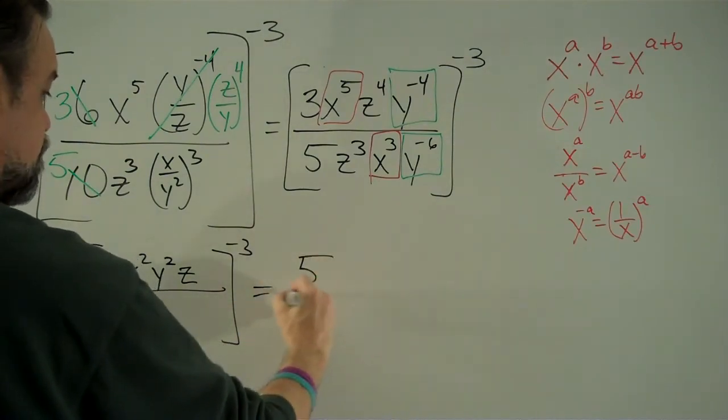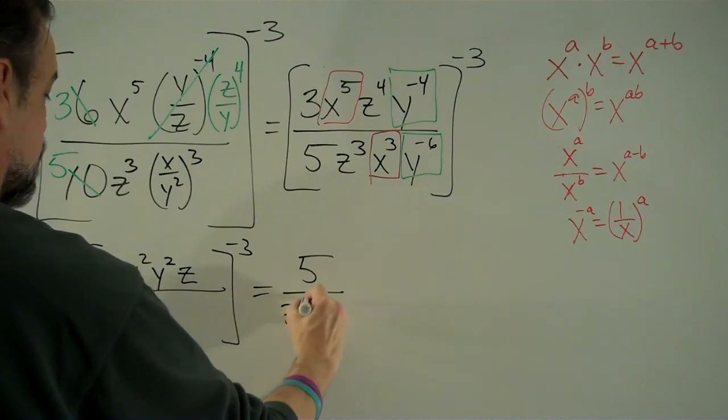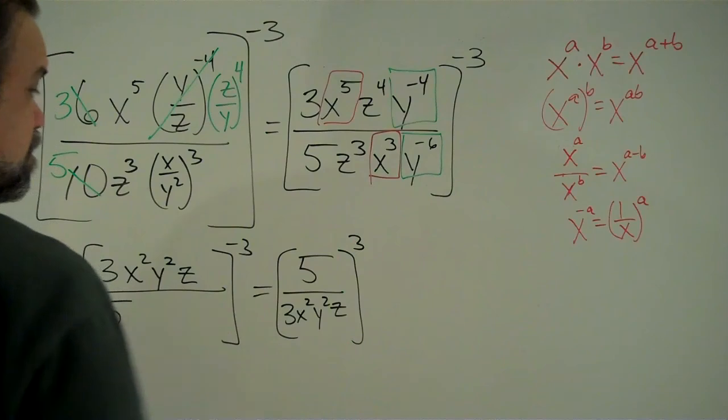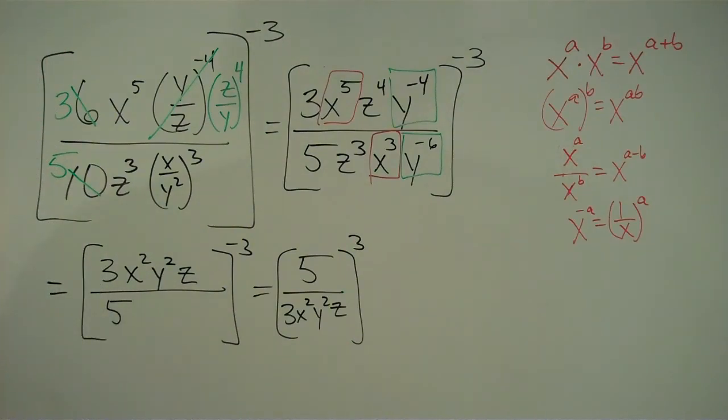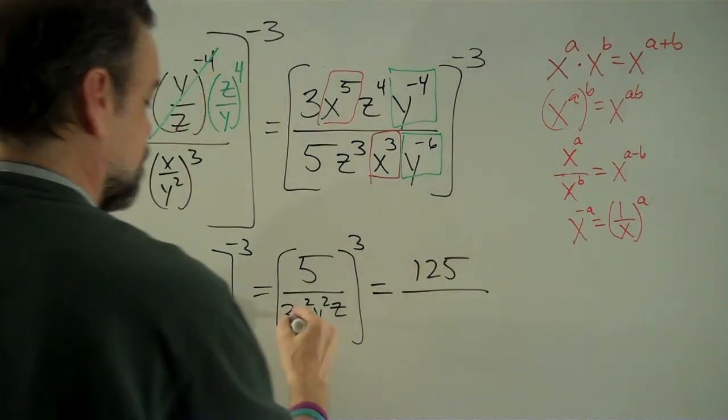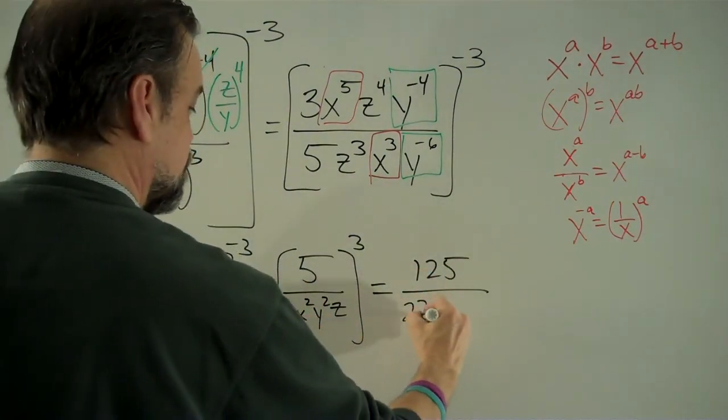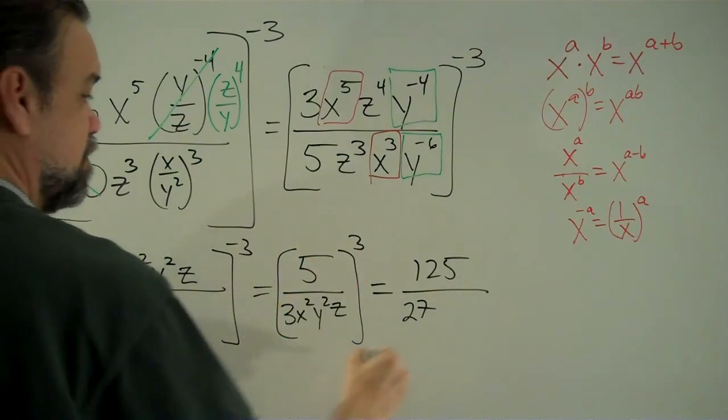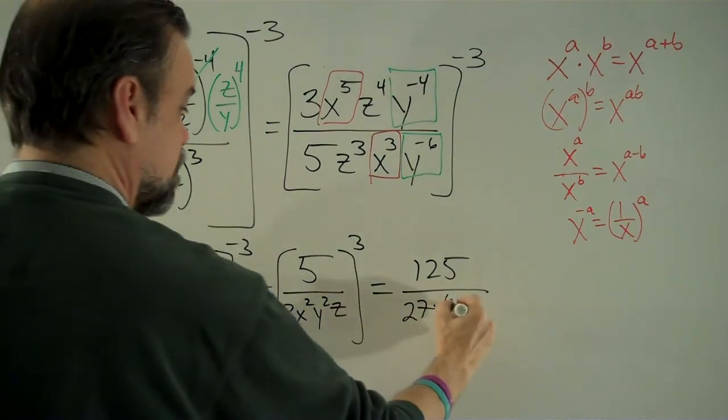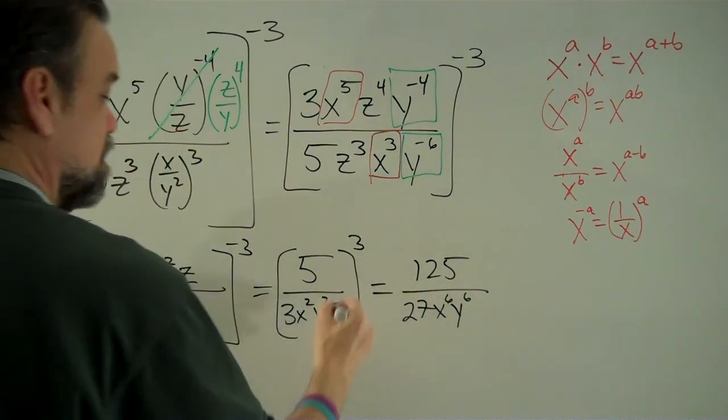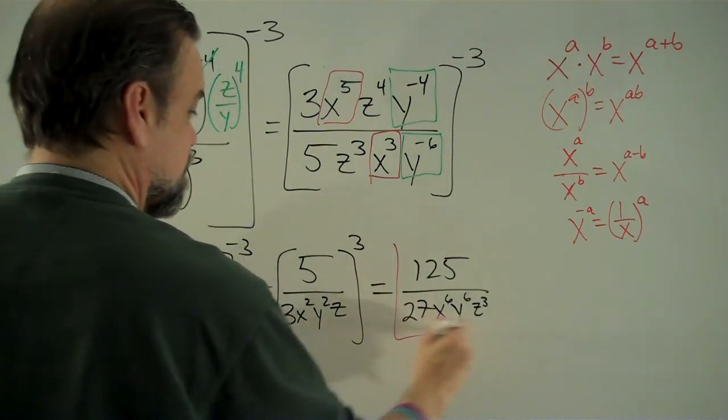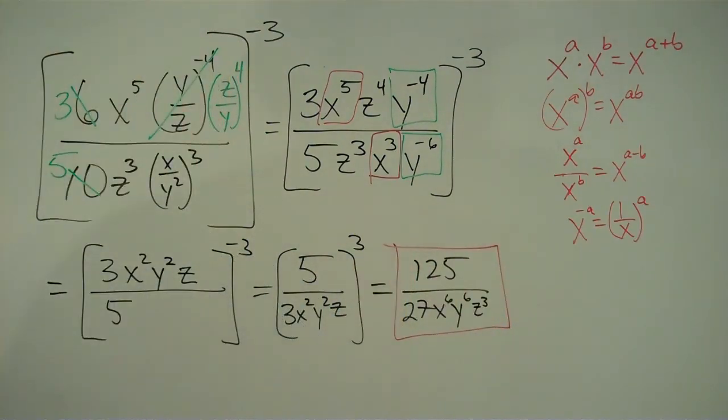So this is going to be 5 over 3x squared y squared z cubed. That's easy. 5 times 5 times 5 is 125. 3 times 3 times 3 is 27. x squared cubed is x to the sixth. y squared cubed is y to the sixth. z cubed is z cubed. And we are done.